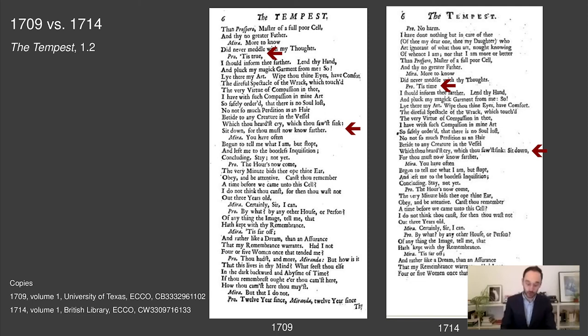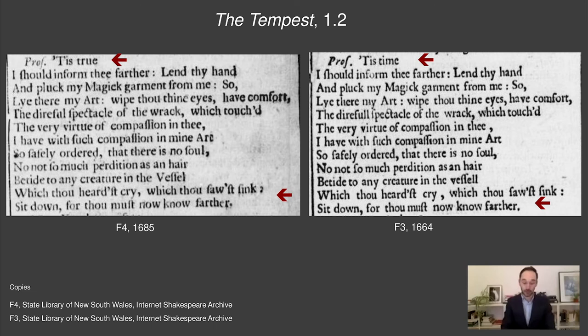The Tempest was first printed in the first folio of 1623, and was subsequently printed in the second folio of 1632, the third folio of 1664, and the fourth folio of 1685. Examining this passage as it appears in these earlier folios reveals the source of the 1714 reading. The fourth folio has the word 'true' and has 'sit down' on the final line — matching the text of 1709 but not 1714. The third folio has the word 'time' and has 'sit down' on the final line — matching neither 1714 nor 1709. This rules out the third folio as a copy text for either of those editions.